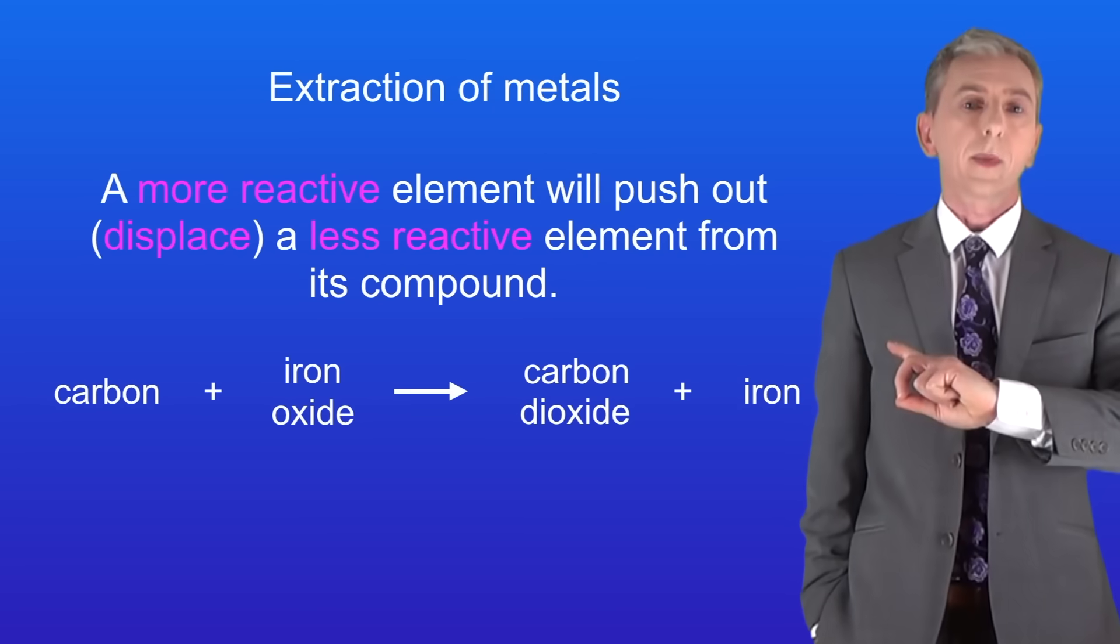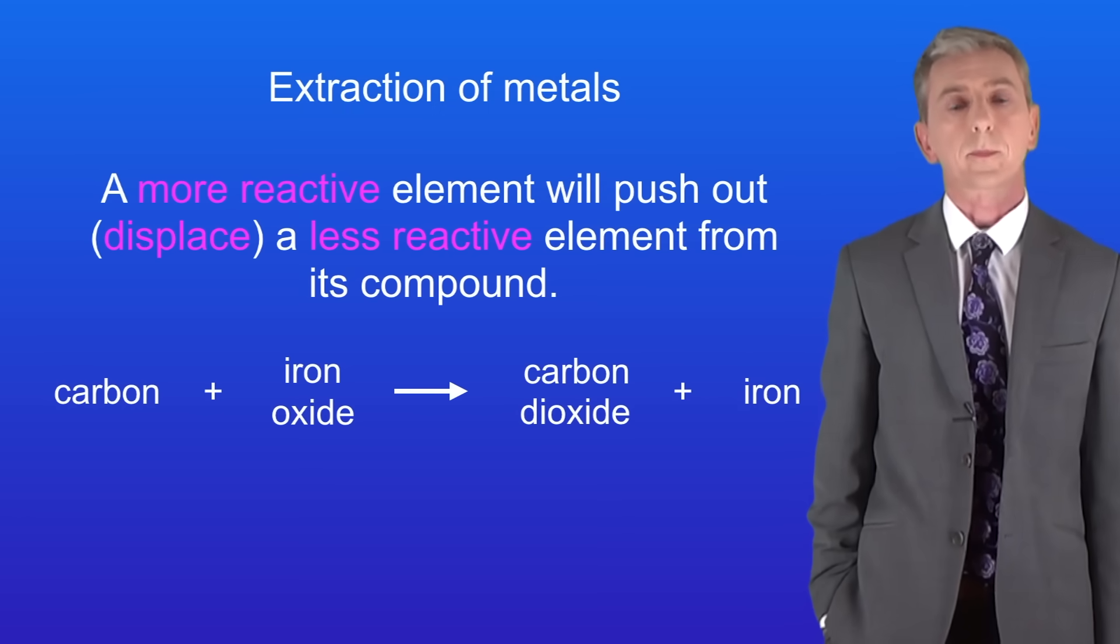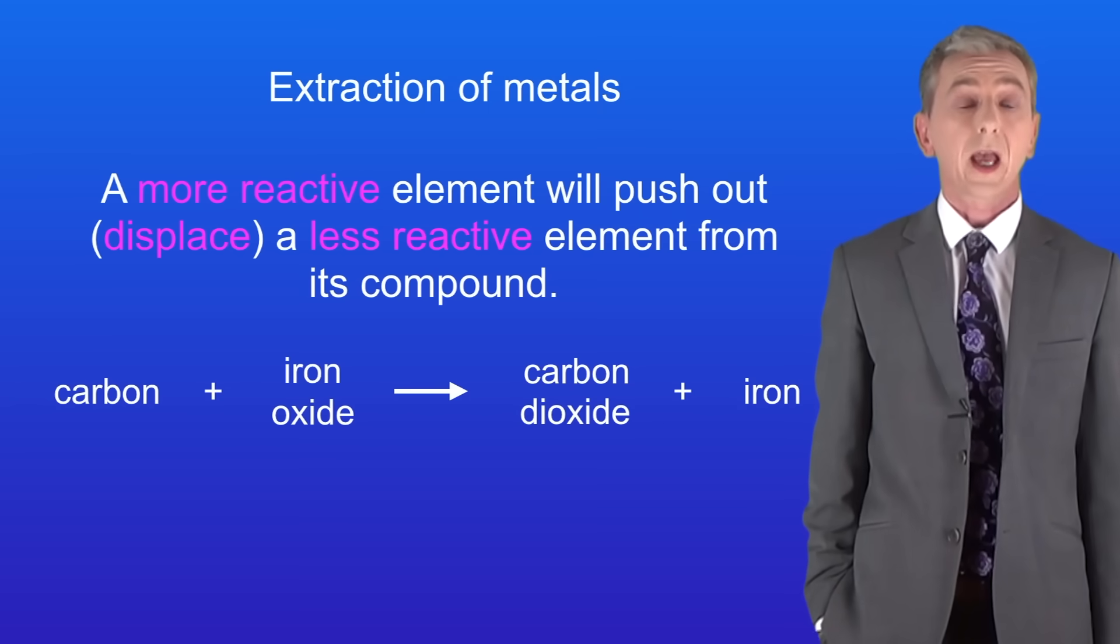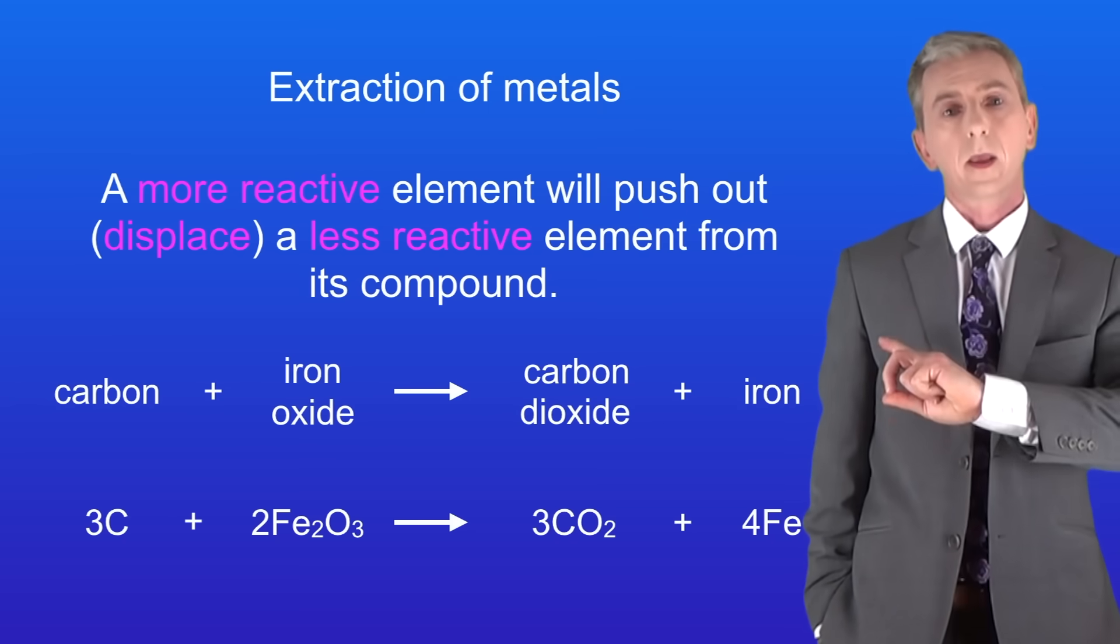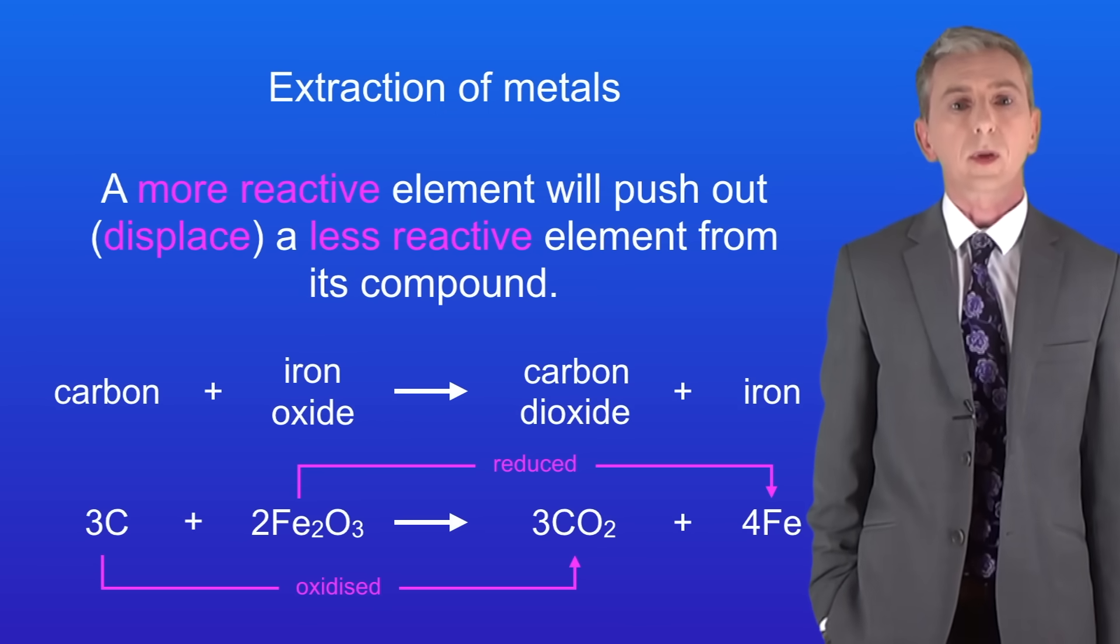Here's a reaction between carbon and iron oxide. Carbon plus iron oxide makes carbon dioxide plus iron. I'm showing you the chemical equation here. Again you can see that the iron has been reduced as the iron atoms have lost oxygen. The carbon has been oxidized because the carbon atoms have gained oxygen.